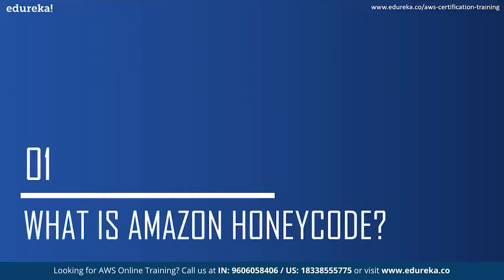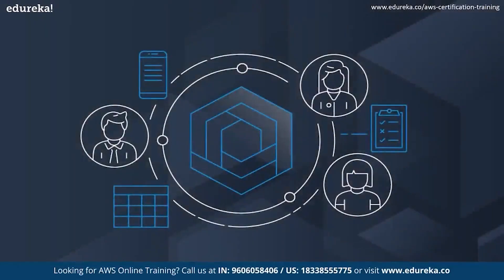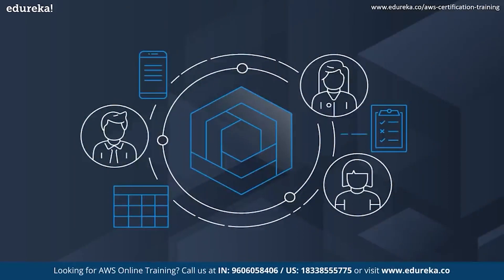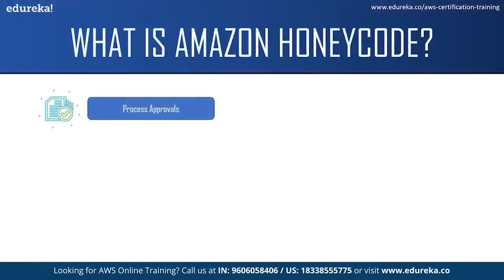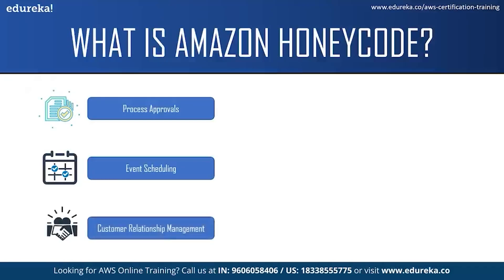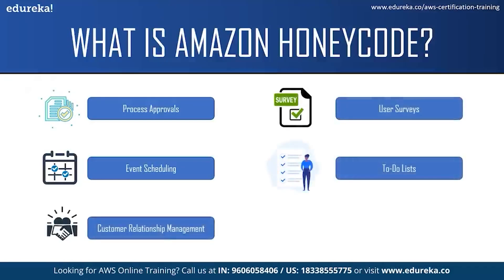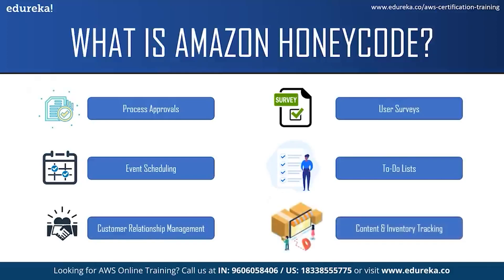Amazon Honeycode is a fully managed service that allows individuals to quickly build powerful mobile and web applications. It can be used by individuals who need applications to track and manage things like process approvals, scheduling, customer relationship management, or user service. It can be as simple as making a to-do list or content and inventory tracking. Users no longer have to rely on error-prone methods like emailing spreadsheets or hiring developers to build costly custom applications.